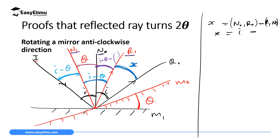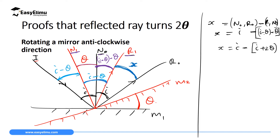So x equals i minus [(i minus theta) minus theta]. Opening the bracket: i minus [i minus theta minus theta] equals i minus i plus 2-theta. Since i minus i equals zero, we get x equals 2-theta. So the angle through which the reflected ray rotates is equal to 2-theta.